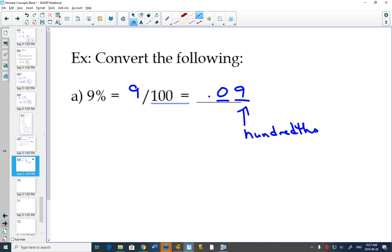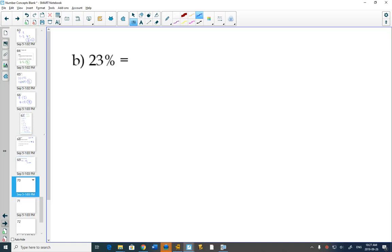To get to your hundredths spot, 23%, if we wanted to write that as a fraction, 23 out of 100, as a decimal, 0.23.